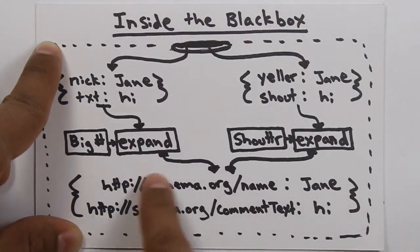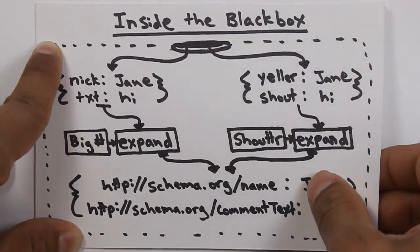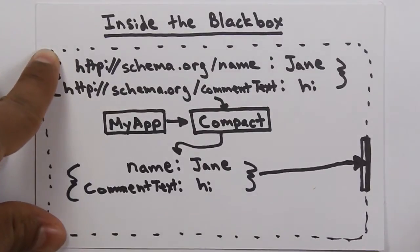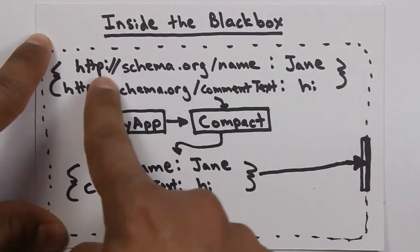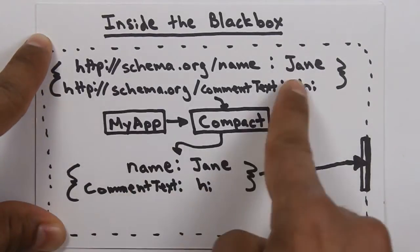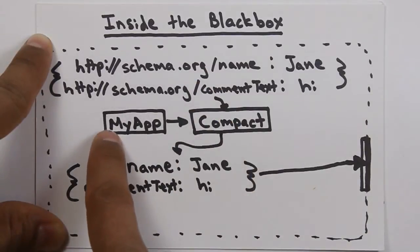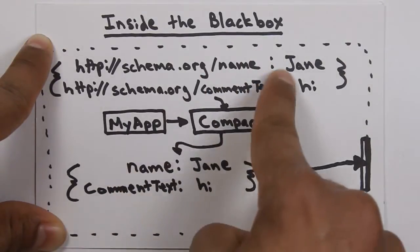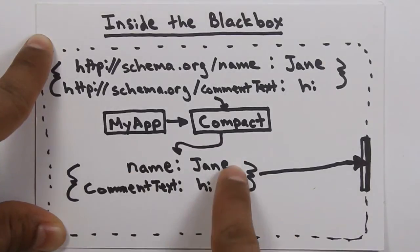Now, the problem here is that no developer would actually want to work with this data. So, we have to send it through another process to give the developer something that's going to be very easy to work with. So, that's where the compaction algorithm comes in. We take this long, big, machine-readable piece of data. We feed it into the compaction algorithm. We also give the compaction algorithm our application's JSON-LD context.